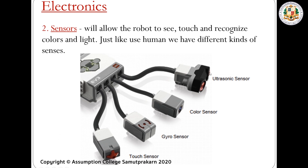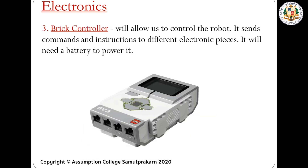Next we have the sensors. We have four different sensors: the ultrasonic, the color, the gyro, and the touch. Sensors allow the robot to see, touch, and recognize colors and light — just like humans have different kinds of senses. Next we have the brick controller; it's like the brain of the robot. This allows us to control the robot — it sends commands and instructions to different electronic pieces. It needs a battery to power it, just like the motors and sensors.